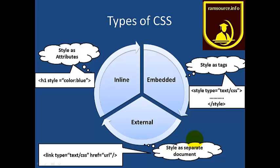Next is the external style sheet. The external style sheet is a separate document — a separate file. To link it, we use a link tag with type text/css and a hyper reference pointing to the external CSS file. So inline and embedded are within one document, whereas external is a separate file.